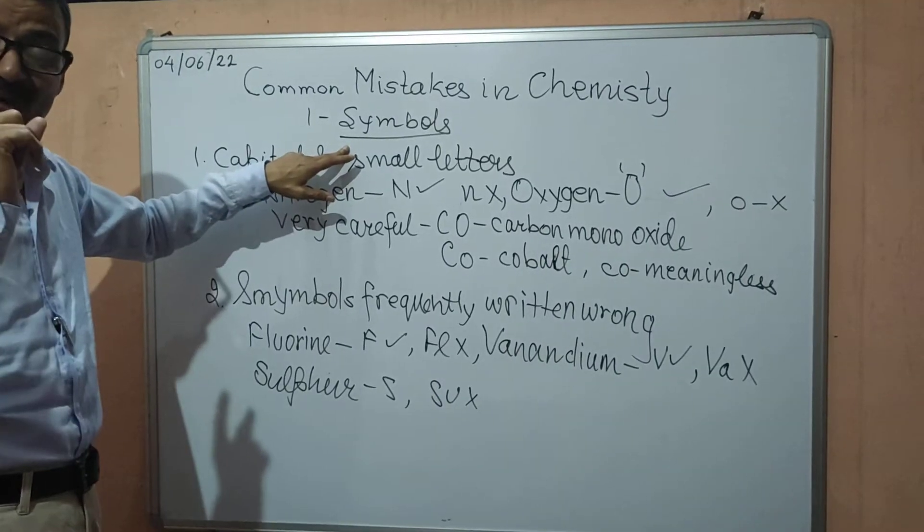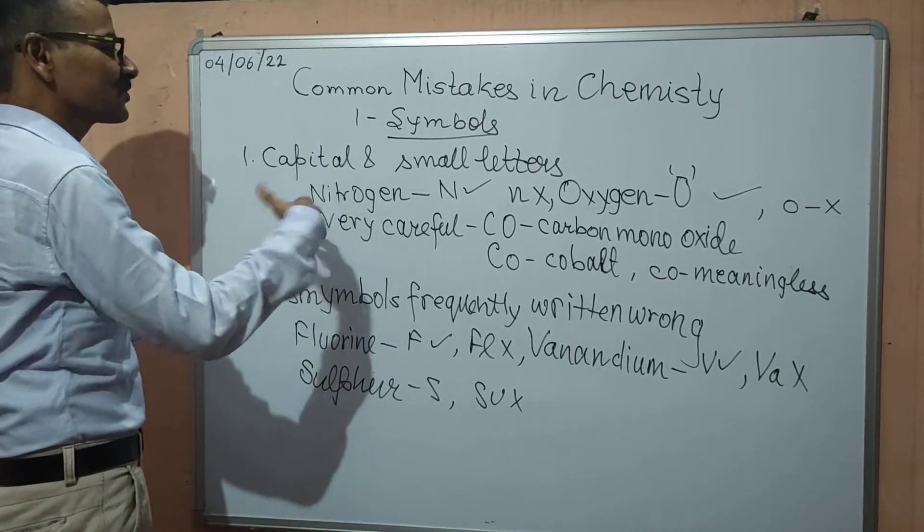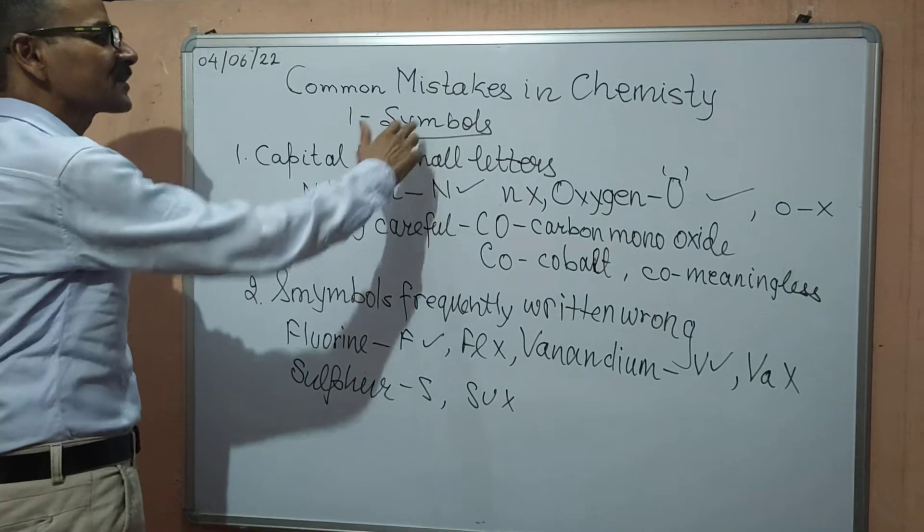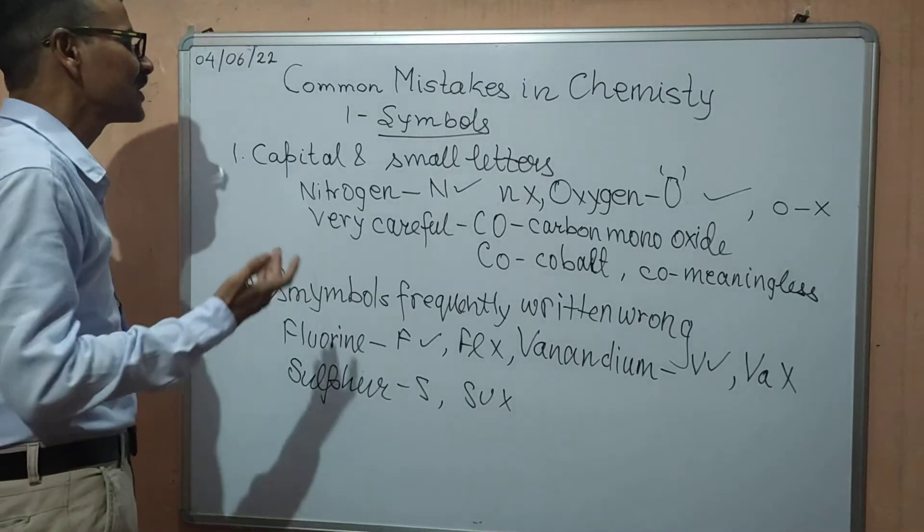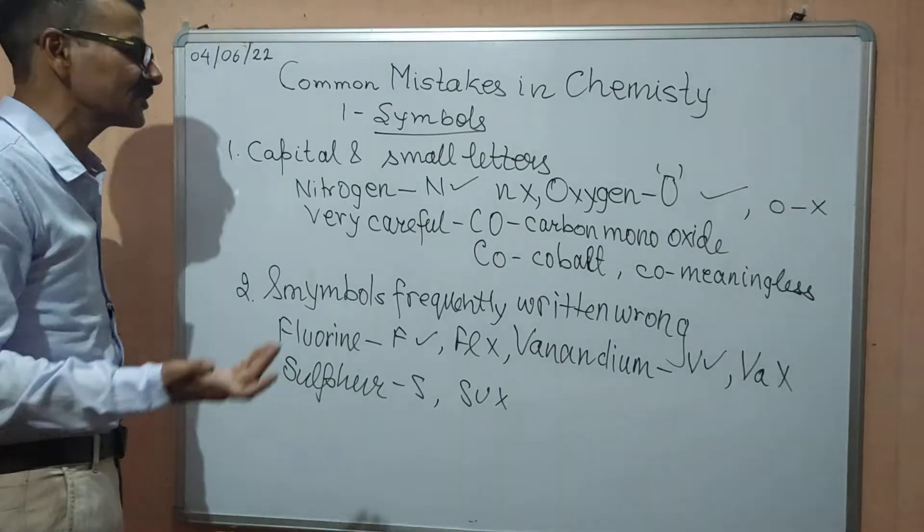Please don't forget about subscribing my channel. Now here first mistake which is possible in capital and small letters. Children, as we know symbols are abbreviated names of the elements. The first letter or the second or the third letter of the element is used as symbol.